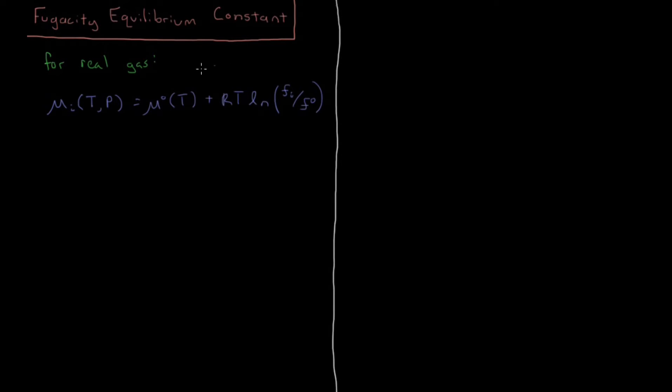And we can remind ourselves that standard fugacity, F0, is just equal to standard pressure, which is equal to 1 bar. Because fugacity, as we recall, is really just the analog for pressure of a real gas, which makes all the equations for chemical potential behave nicely so that we can treat it like an ideal gas. So it's the hypothetical pressure that an ideal gas with those properties would have for a given real gas.